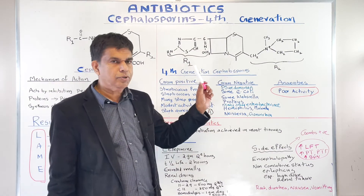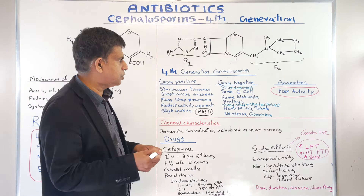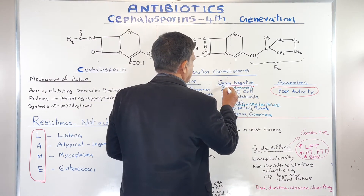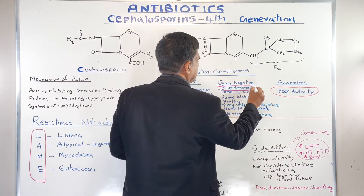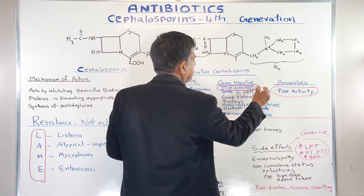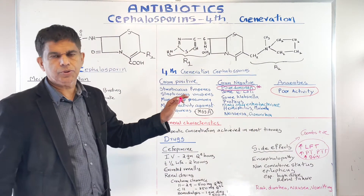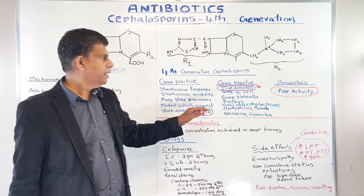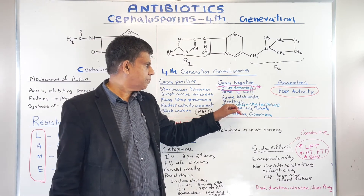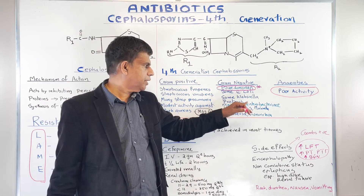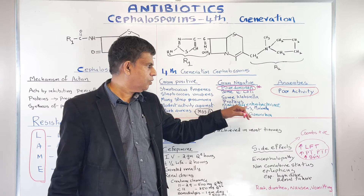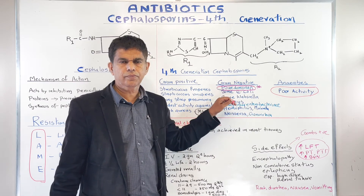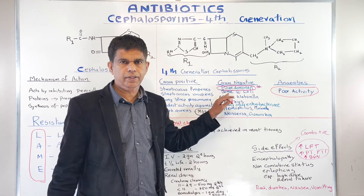When you talk about the gram-negative coverage, this is the most important part. Pseudomonas — very, very important. This drug covers Pseudomonas infections very effectively. Also some E. coli, some Klebsiella, Proteus, many other Enterobacteriaceae, Haemophilus, Moraxella, Neisseria gonorrhoeae — all of these are covered in the gram-negative spectrum.